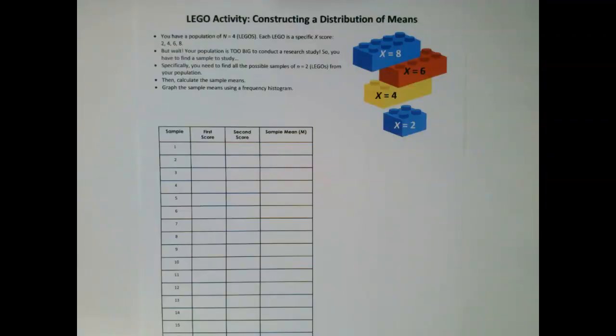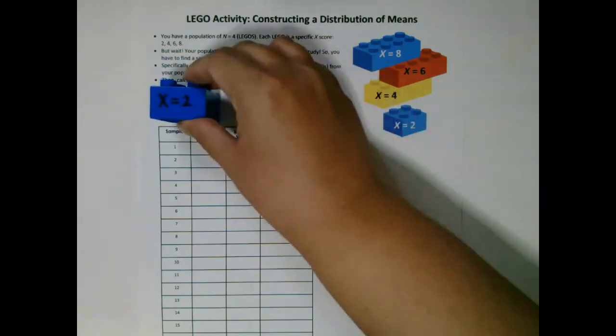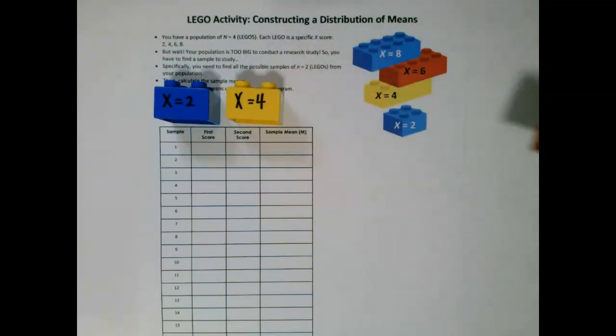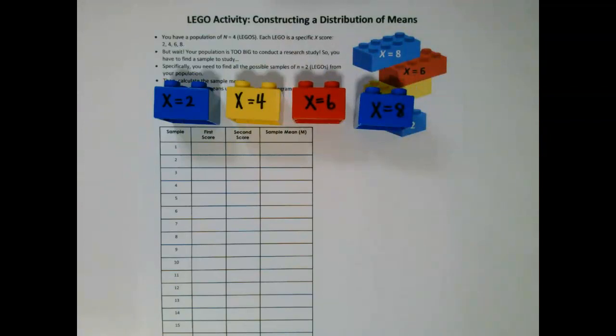To do this Lego activity, you will have a population of n equals 4 Legos. Each Lego is a specific X-score: X equals 2, X equals 4, X equals 6, and X equals 8. But your population is too big to conduct a research study, so you have to find a sample to study. Specifically, you need to find a possible sample of n equals 2 Legos from your population.